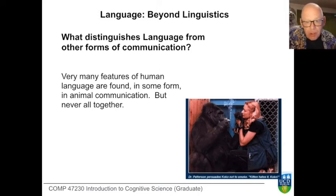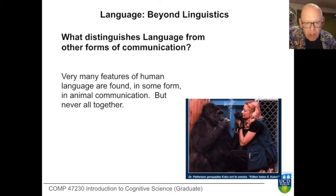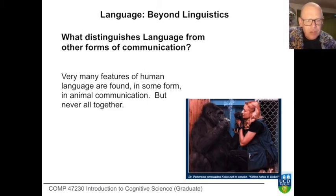Some of the research has been done using great apes. That down there in the right-hand corner is Coco the gorilla, one of the apes so studied. Coco was taught American Sign Language, and yes, she is smoking. Some of this research has ethical problems. But let's start further from humans and consider the humble honeybee.